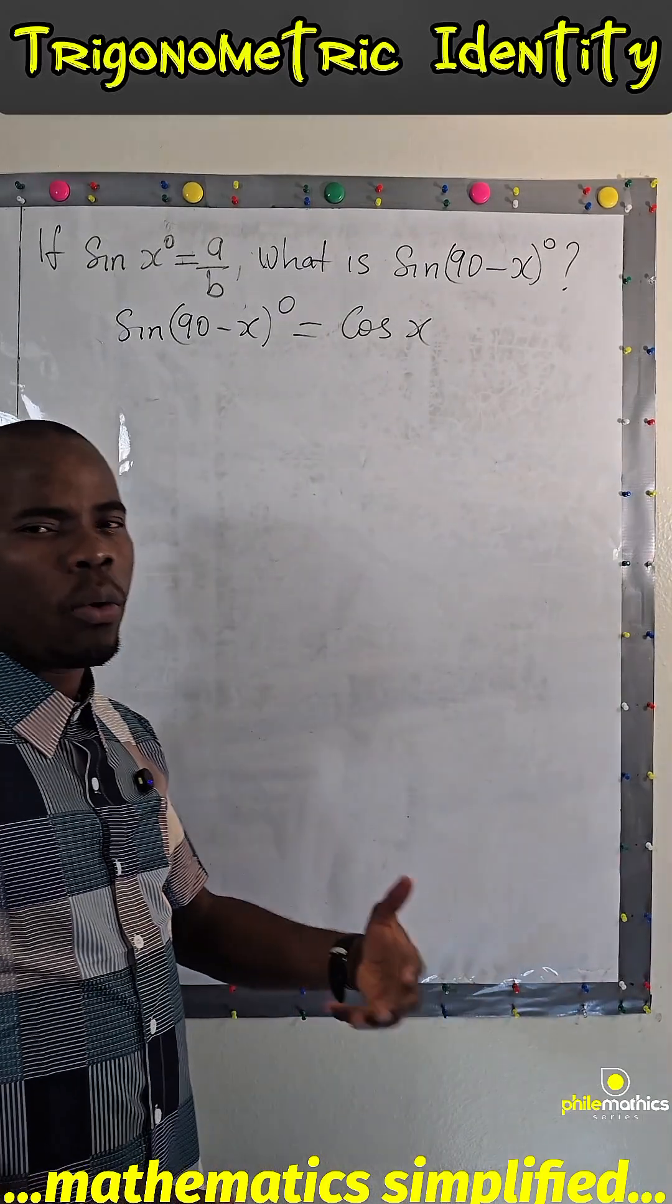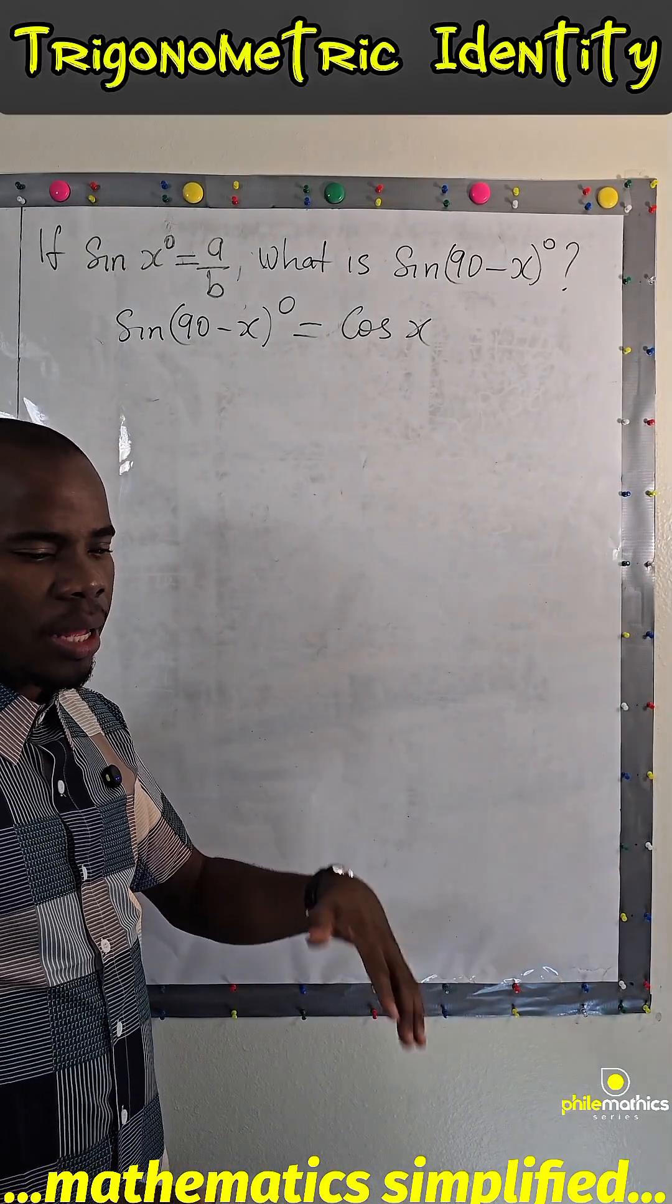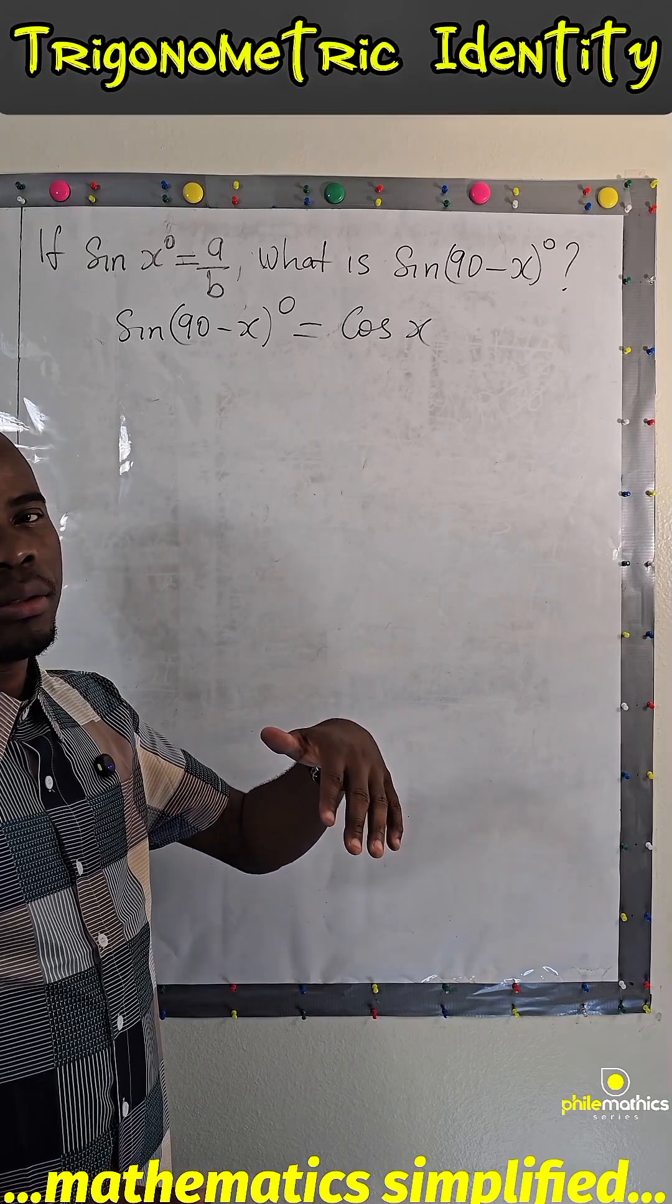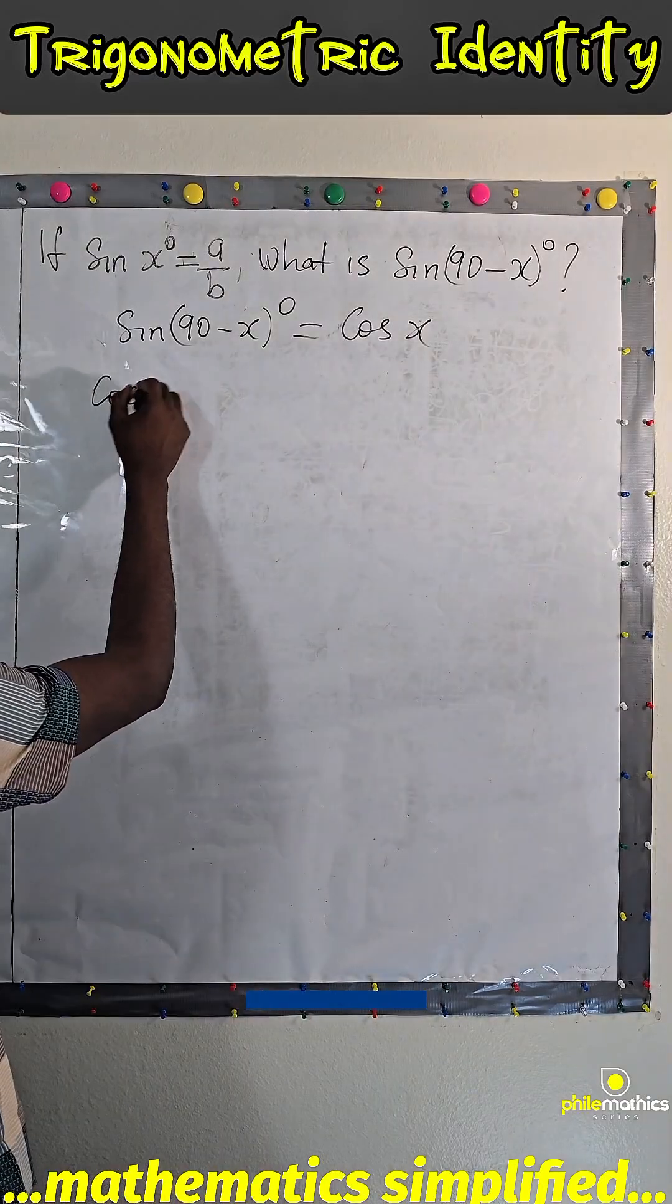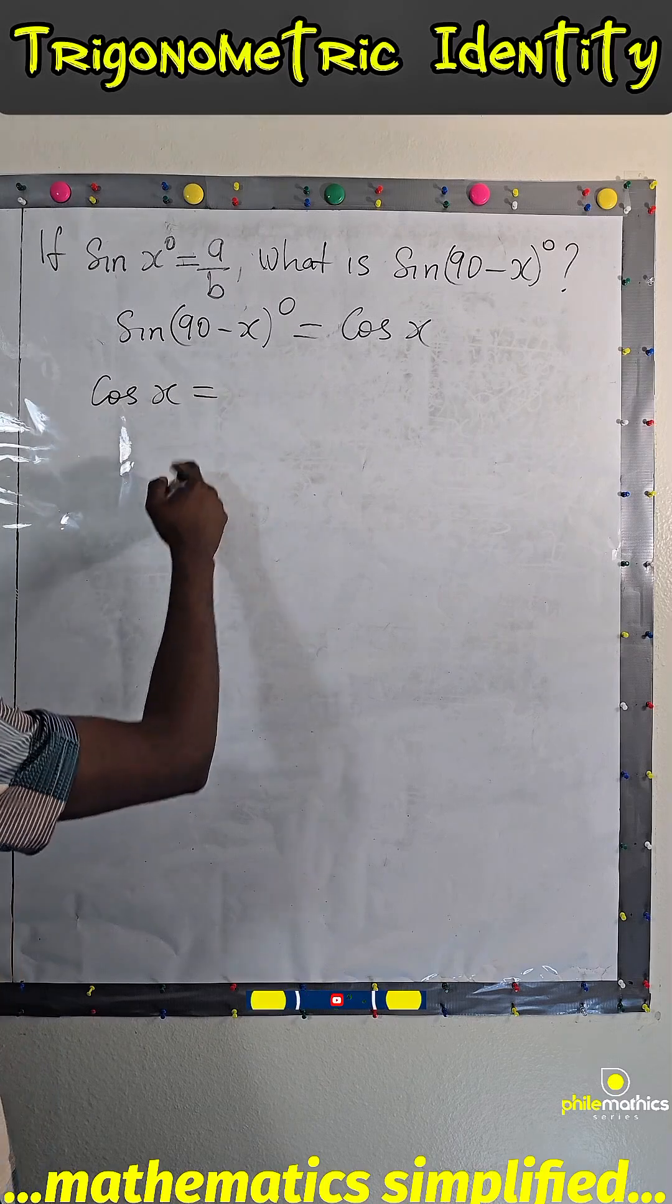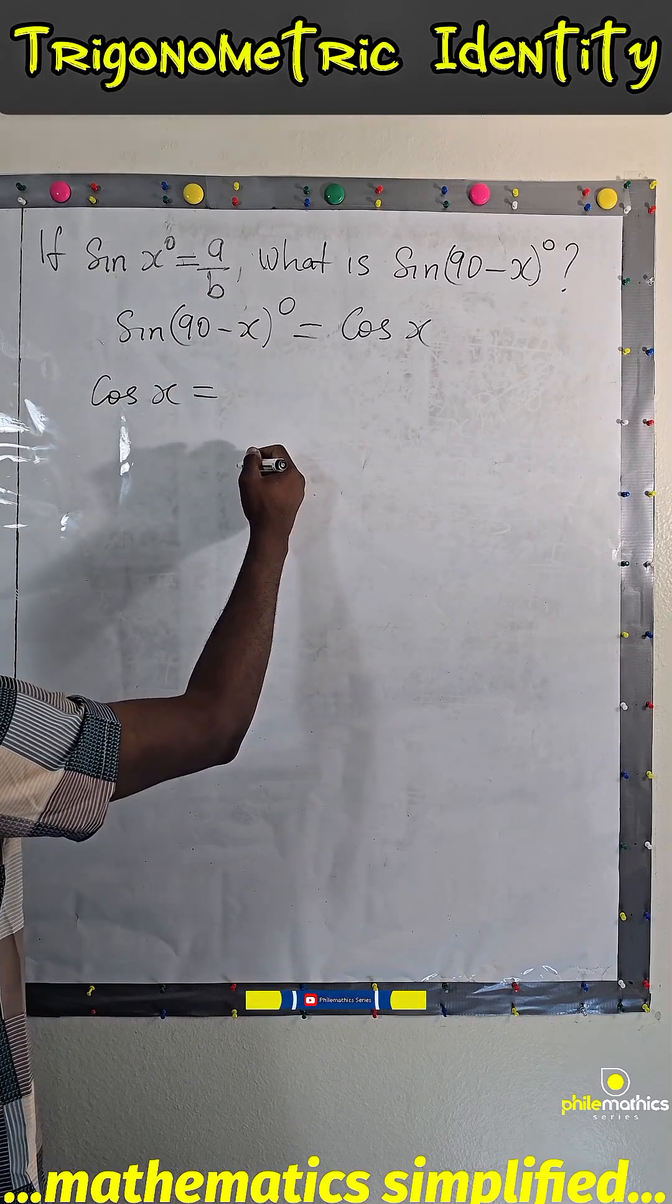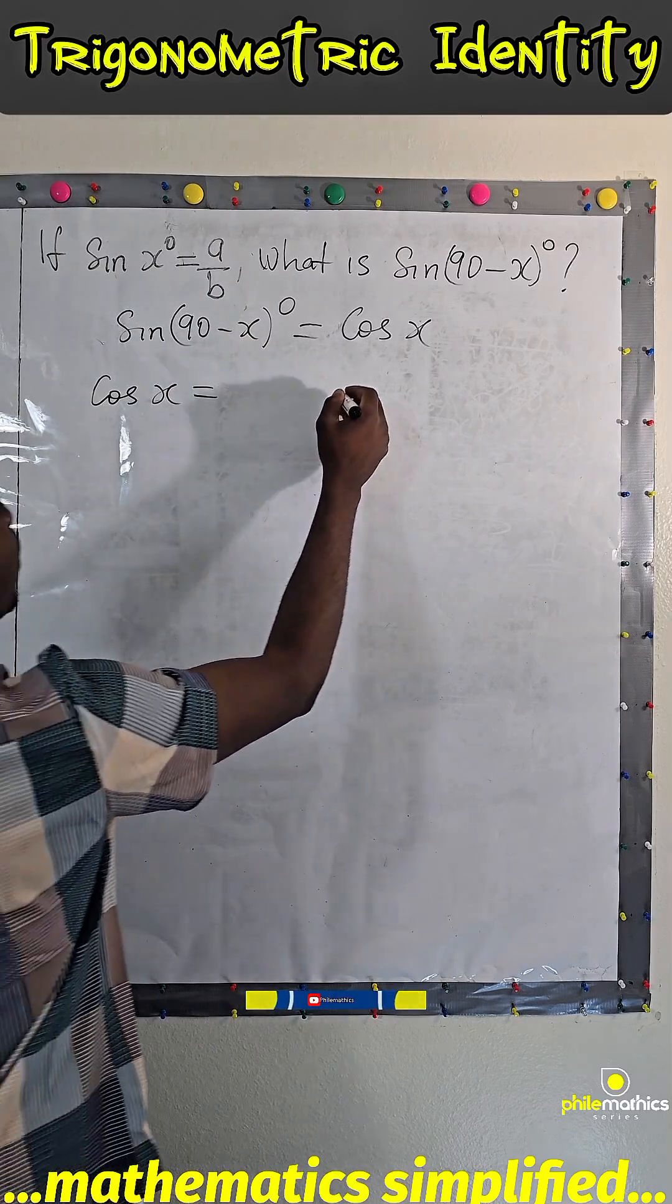That is why we have sine 30 equals cos 60 and sine 60 equals cos 30. So cos x will be... since sine x is a over b, remember that.